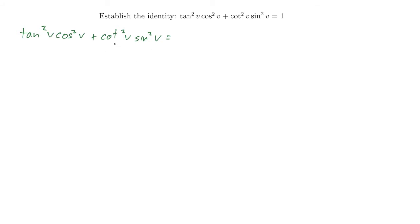I have tangent squared and I have cotangent squared. Let's write everything in terms of sines and cosines. So tangent squared v is sine squared v over cosine squared v. So this is sine squared v over cosine squared v. And I'll just leave my cosine squared v there. Don't have to change anything then.